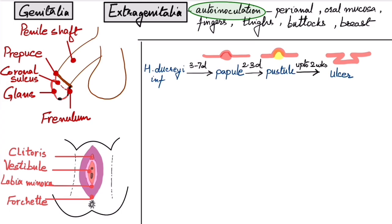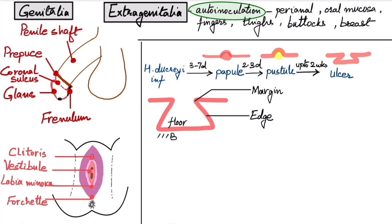The description of the ulcer is very important. The ulcer will have a margin where the ulcer meets the surrounding skin, an edge which is basically the wall of the ulcer, a floor, and the base of the ulcer is on which the ulcer rests.